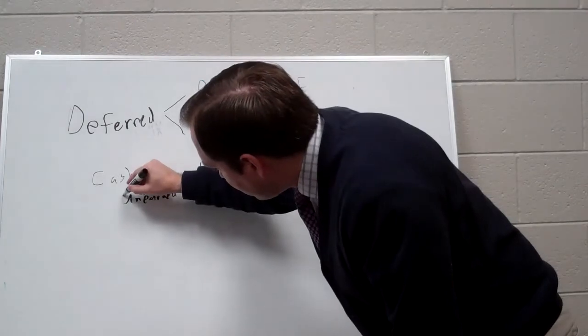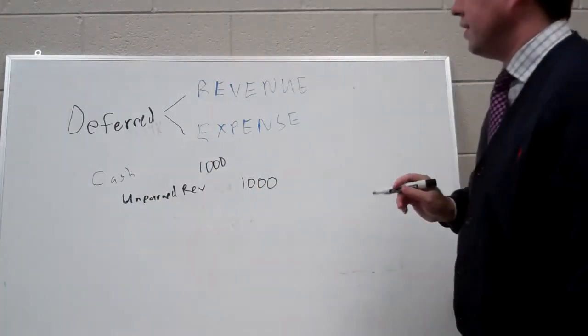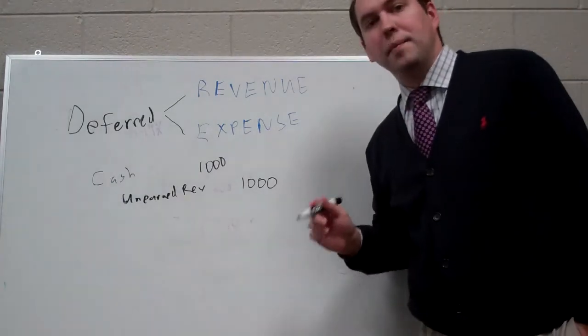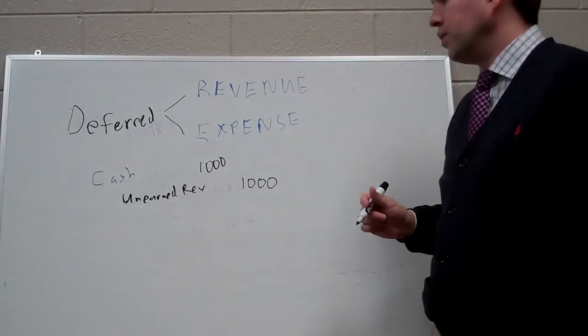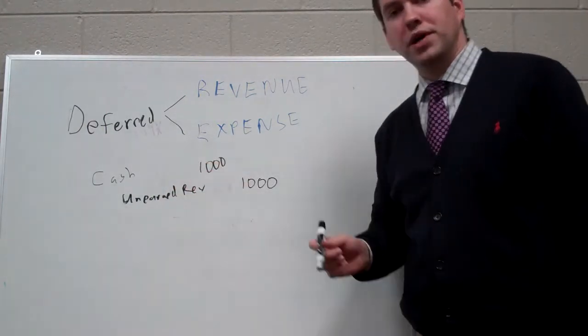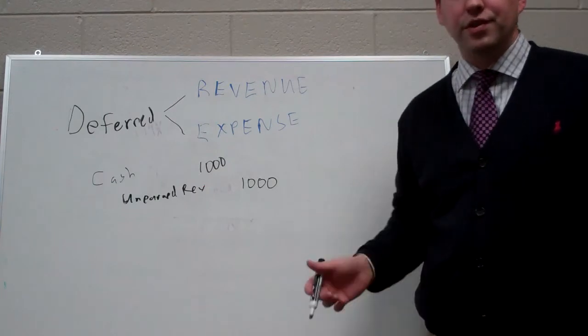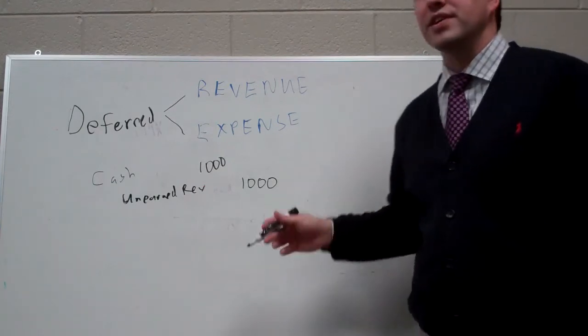Now, unearned revenue sounds like a revenue, but it's actually not. It's actually a liability. We record a liability here because when we've taken this customer's money, we now have an obligation to either provide the service or give them the money back. That's a liability.